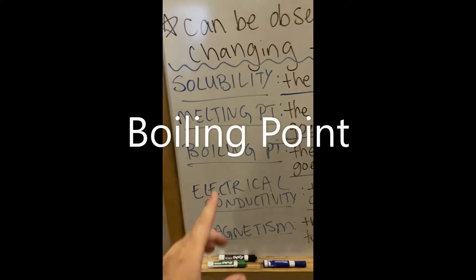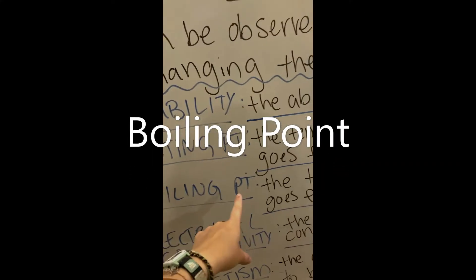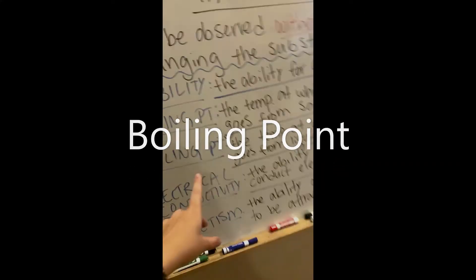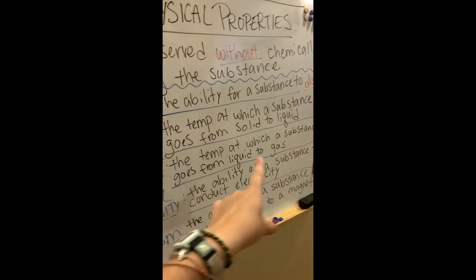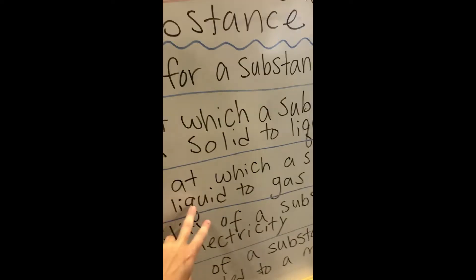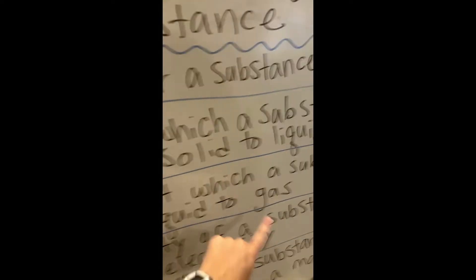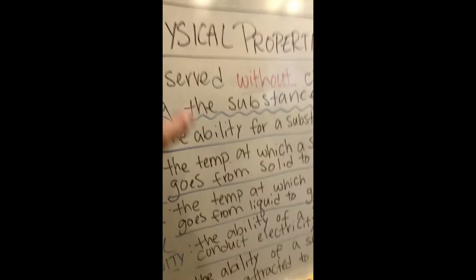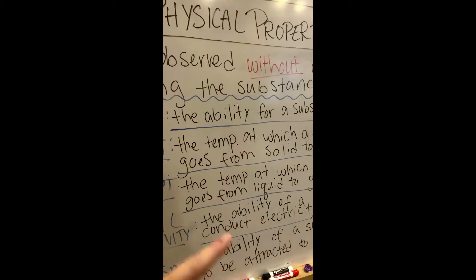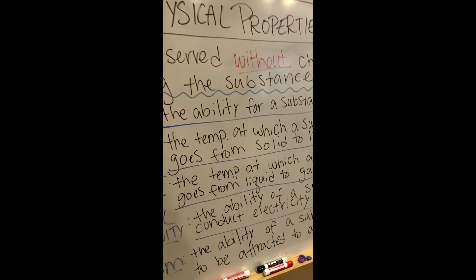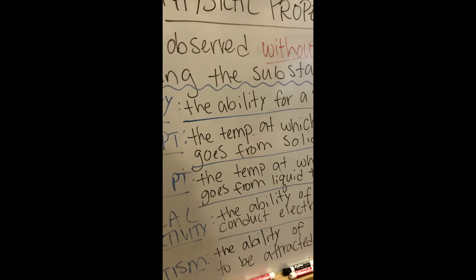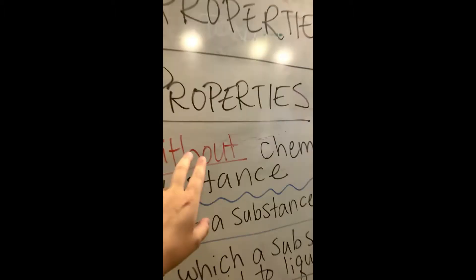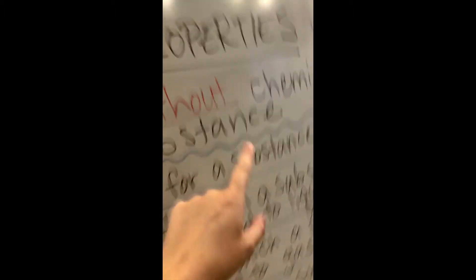To quickly show you boiling point — that is the temperature at which a substance goes from a liquid to a gas. Once again, this is a physical property where you change the state of the substance in order to measure it, but you do not change it chemically.